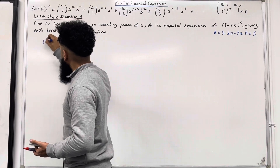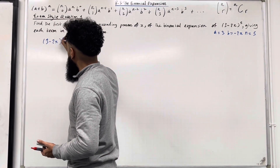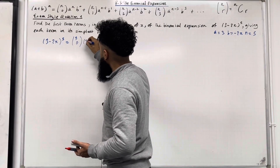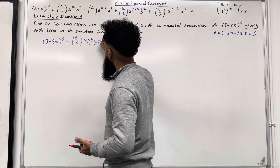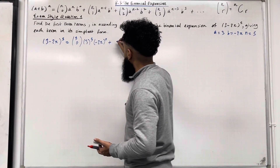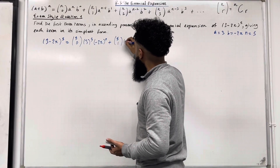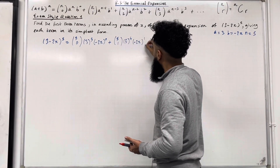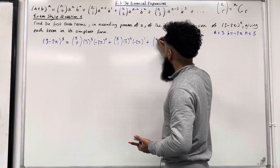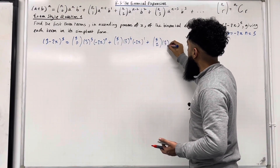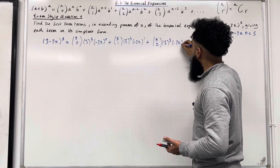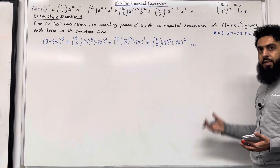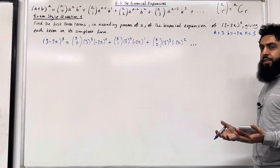(3 minus 2x) to the power 5 equals: 5 choose 0, times 3 to the power 5, times (minus 2x) to the power 0, plus 5 choose 1, times 3 to the power 4, times (minus 2x) to the power 1, plus 5 choose 2, times 3 to the power 3, times (minus 2x) to the power 2, dot dot dot. The expansion continues — we only want the first three terms.